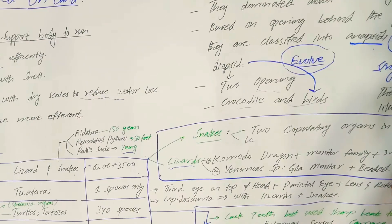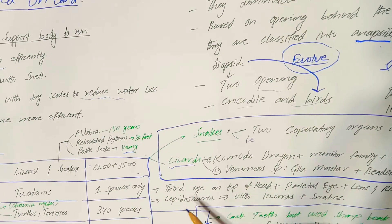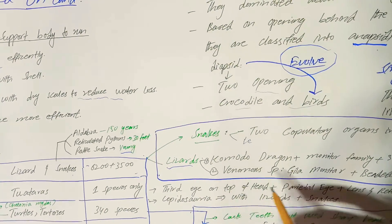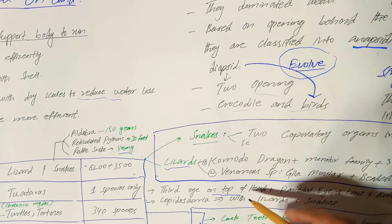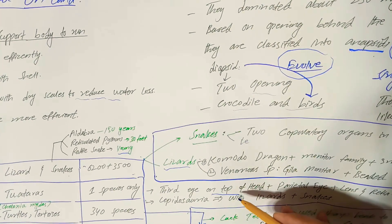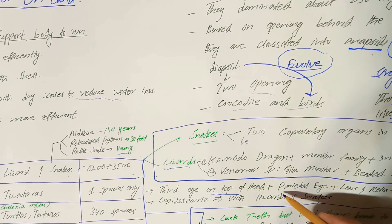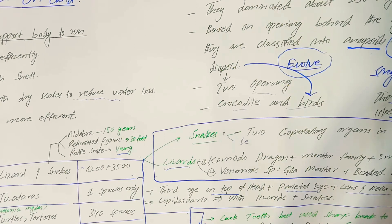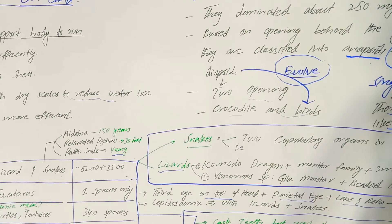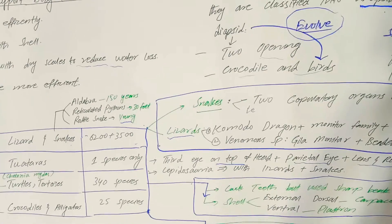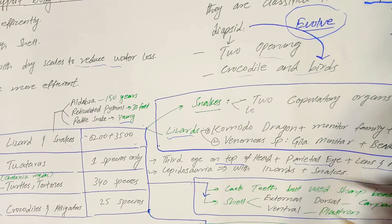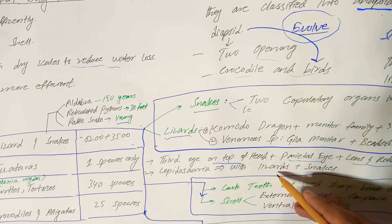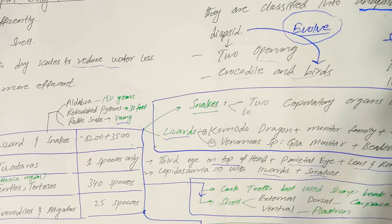Order Rhynchocephalia has a distinctive character: a third eye, called the parietal eye, present on the top of the head. This eye has a lens and retina directly connected to the brain. Order Rhynchocephalia includes the group Lepidosauria, which is placed alongside lizards and snakes.